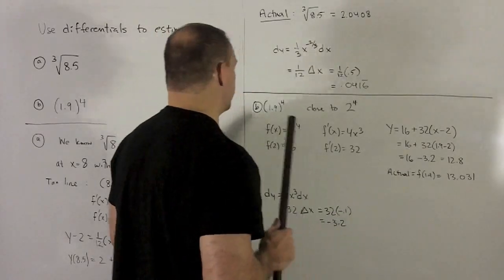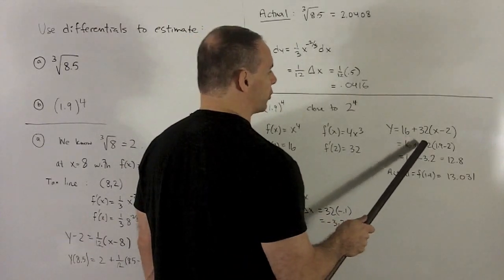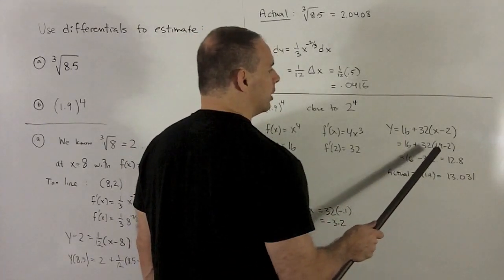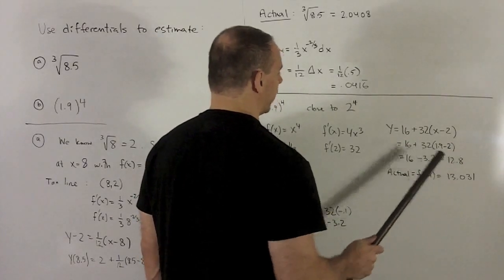So I put in my number 1.9 into the tangent line and see what comes out. So we get 16 plus 32 times (1.9 minus 2). That's going to give me minus 0.1, so we're looking at 16 minus 3.2, or 12.8.